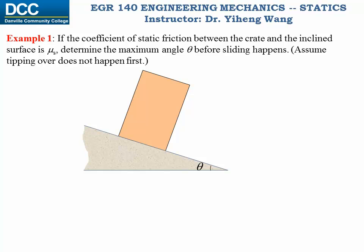In this example, let's assume that tipping over does not happen first, and we are asked to determine the maximum angle theta before sliding happens. Notice that very little information is given for this problem — we don't know the weight of the crate, and we don't know the dimensions either.